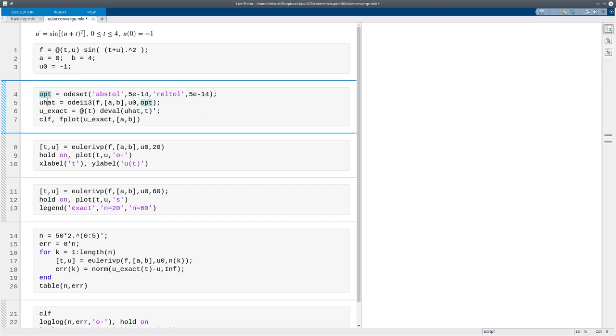With one output, I have the structure form of the solution, so I have to wrap that inside DEVAL. And what I get here is just a callable function for the solution, which I now plot over the interval. So this is my stand-in for the exact solution.